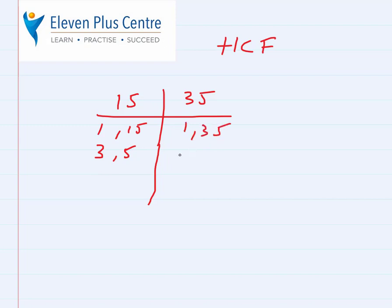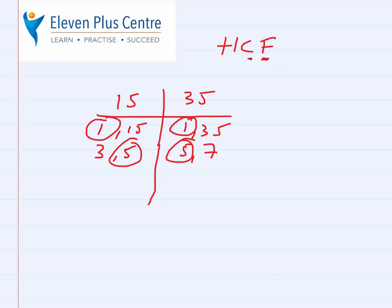For 35: 1 and 35; 2, 3, 4 don't work; 5 and 7, because 5 times 7 is 35; 6 through 10 don't work. So the factors of 35 are 1, 5, 7, and 35. Now we look for the common ones — numbers in both lists. 1 is in both, and 5 is in both. The highest of these common factors is 5. So the highest common factor of 15 and 35 is 5.